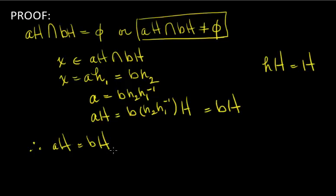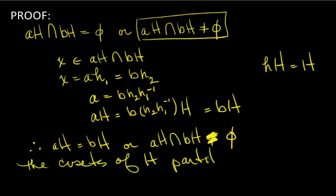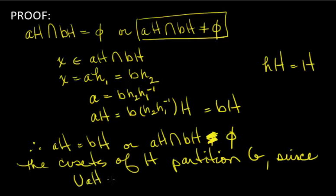Therefore, for any A and B in G: AH equals BH, or AH intersect BH equals the empty set. This means the cosets form a partition. The cosets of H partition G, since the union of all the cosets equals G and they are pairwise disjoint.